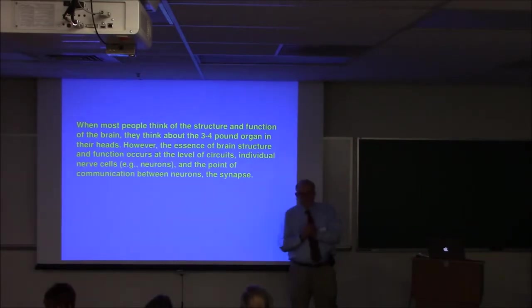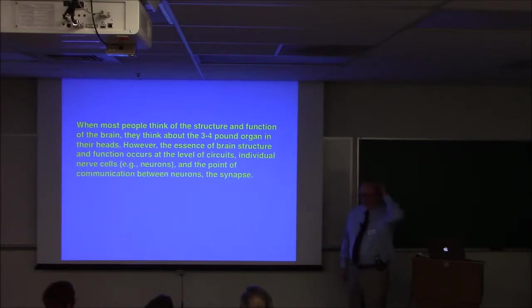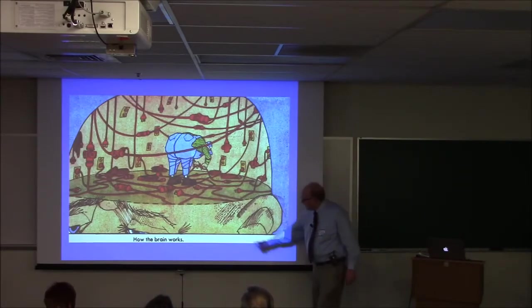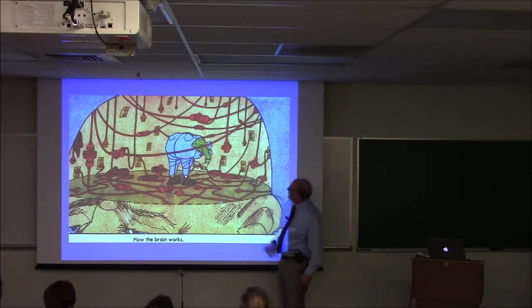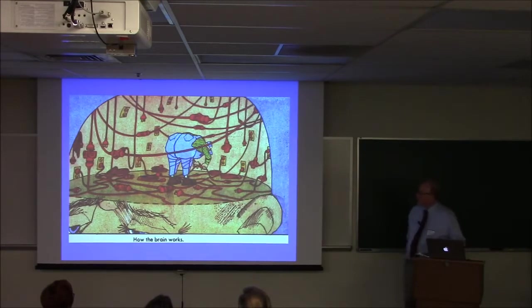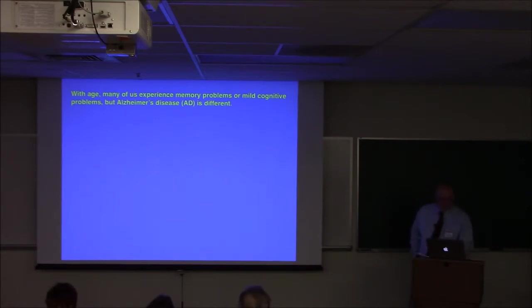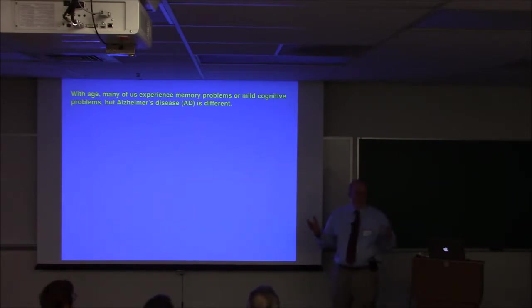So when most people, I think this is a fairly sophisticated crowd, but when most people think about the brain, they think about this three or four pound thing in their skull. But the essence of brain structure and function occurs at the level of circuits. Individual nerve cells that we call neurons, and the point of communication between neurons we call synapses. That's the essence of brain function. And that's depicted in this very old cartoon that I love. You don't want too many of these. This is early Alzheimer's. It's not connected to anything. But it is kind of, even though it's funny, it's really connectivity in the brain that matters.